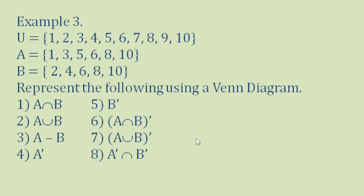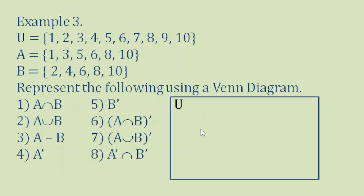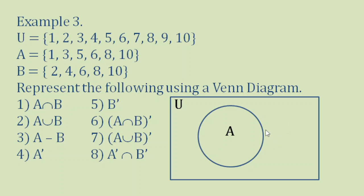First, we draw our rectangle representing the universal set U. Then we draw our circle for set A. Before drawing the circle for set B, we check if there are common elements. In this case, we have 6, 8, and 10. So we will draw set B intersecting set A. We place the common elements — 6, 8, and 10 — in the intersection region.